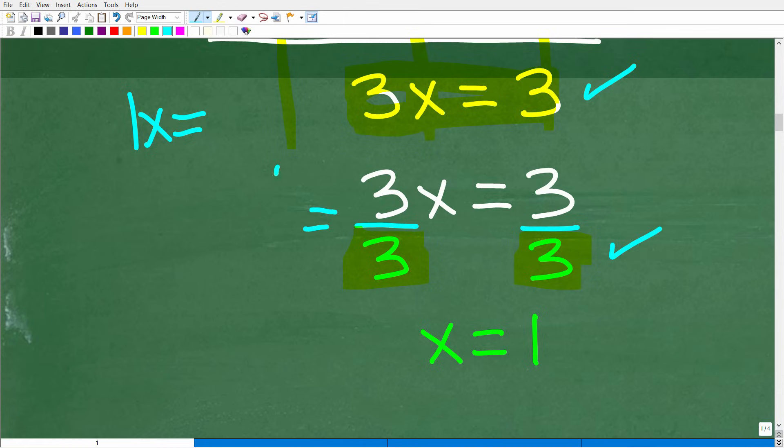OK, so 3 divided by 3 is what? 1, or 1x, or just x. So when you see an x like this, there really is a 1 in front of it. So 3 divided by 3 is 1, 1x, or just x. And of course, 3 divided by 3 is 1. So the correct solution is 1.